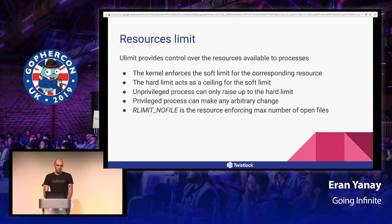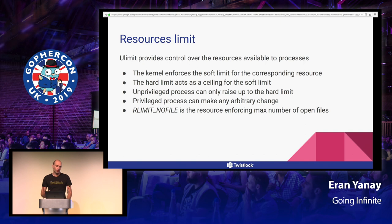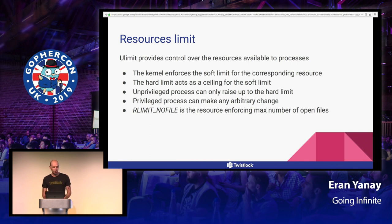Ulimit provides control over the resources available to processes, and it's set per process. The kernel enforces both a soft limit and a hard limit for every corresponding resource. The soft limit is the actual limitation, but it's sort of a suggestion. The hard limit is a ceiling for the soft limit, and any process — privileged or unprivileged — can raise the soft limit up to the hard limit. A privileged process can make any arbitrary change.